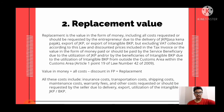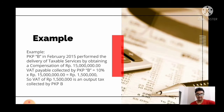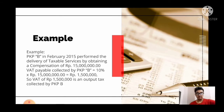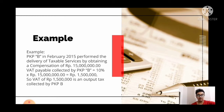All costs include insurance costs, transportation costs, shipping costs, maintenance costs, warranty fee, and other costs requested by the seller due to delivery, export, or utilization of intangible JKP or BKP. For example, PKPB in February 2015 performed the delivery of taxable services by obtaining compensation of 15 million. VAT payable collected by PKPB is 10% multiplied by 15 million, equal to 1,500,000. So VAT of 1,500,000 is an output tax collected by PKPB.